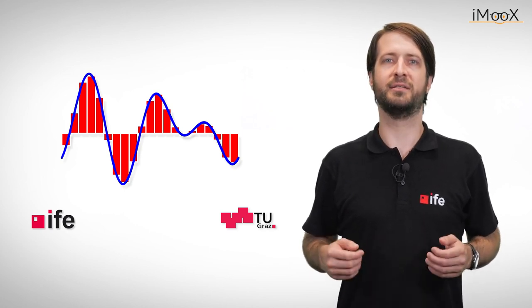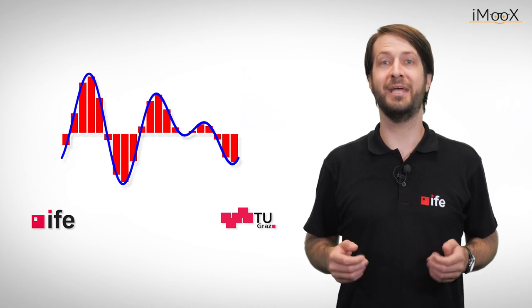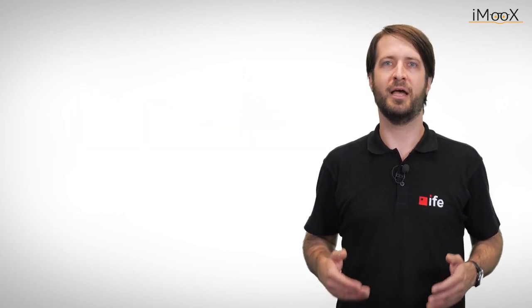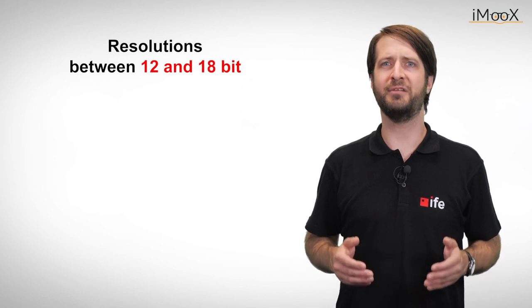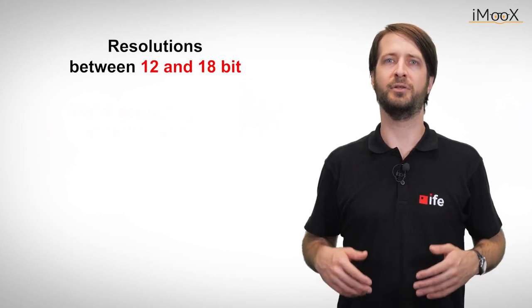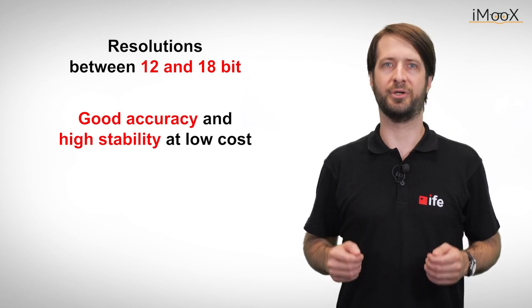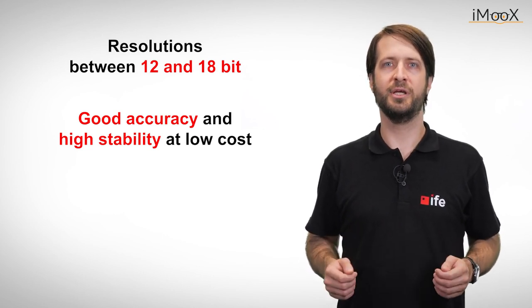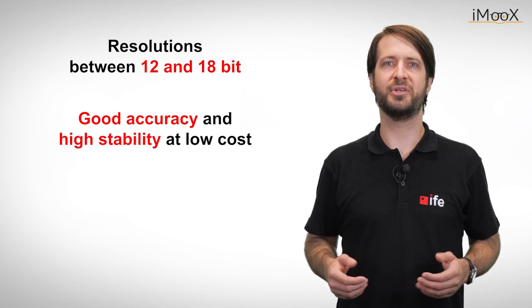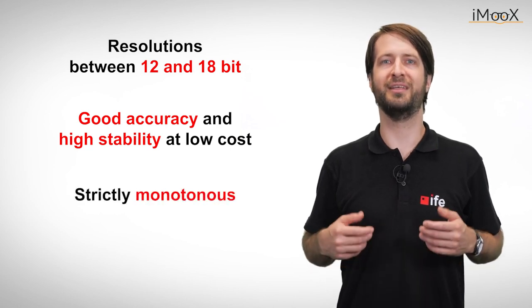You can see that the dual slope conversion has many advantages. These ADCs have high resolutions between 12 and 18 bits and offer good accuracy and high stability at low cost. Another advantage is that the digital output codes are strictly monotonous with increasing input.